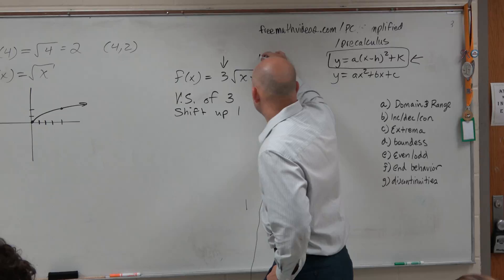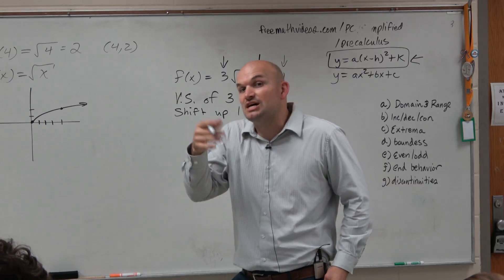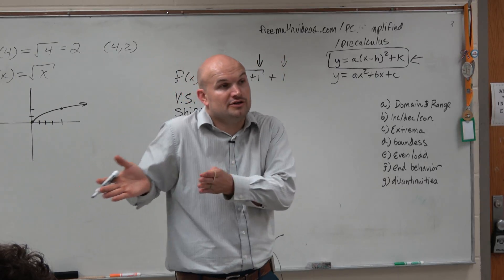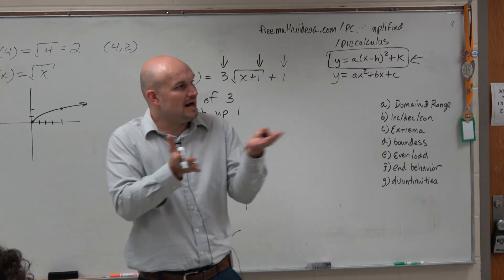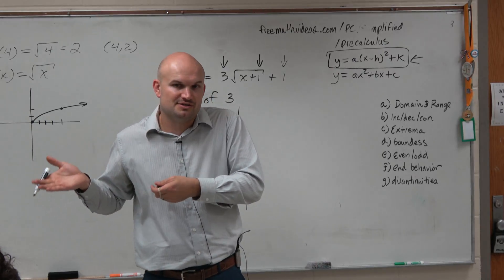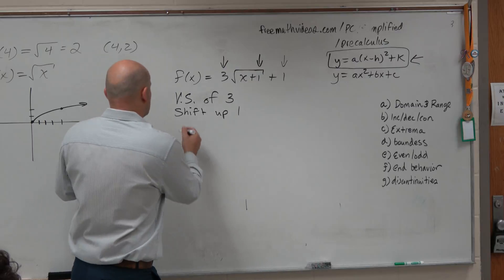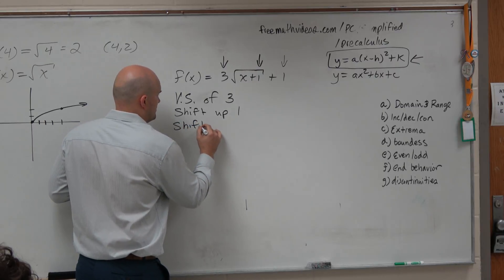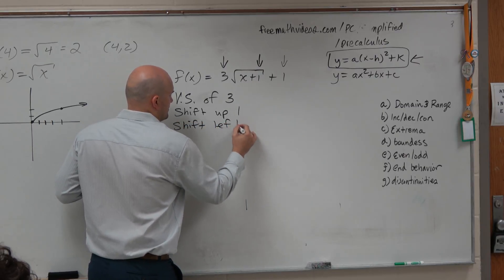Then I look at my last transformation, which is a plus 1. But that's under the radical. So I know under the radical is horizontal. And I also know that's kind of opposite. So that's going to shift my graph 1 unit to the left. So shift left 1.